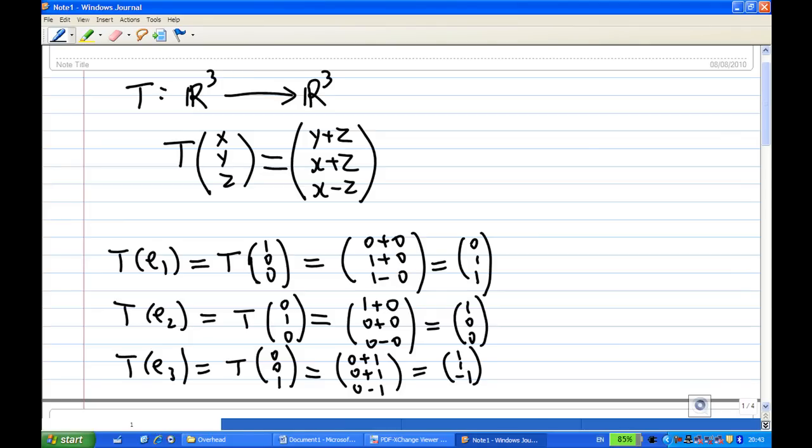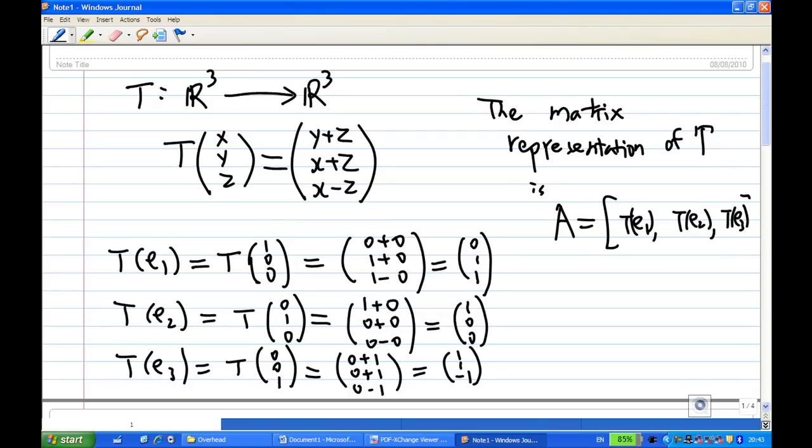Therefore, the matrix representing T is A. The matrix representing T, in this case, let's call it A, and this A is the matrix given by T(e₁), T(e₂), T(e₃) in each column.